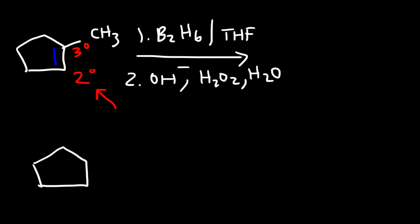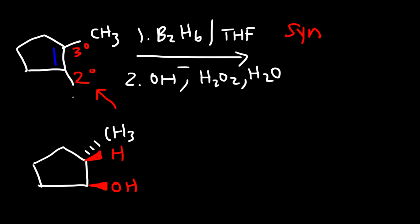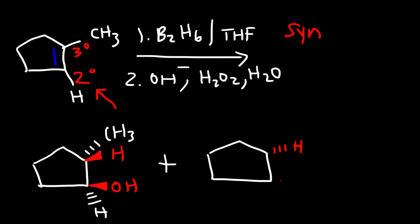We're going to add a hydrogen and an OH group. Let's put the alcohol on the wedge. This reaction occurs with syn addition, so the hydrogen and the OH group are added on the same side. That means the methyl group has to be on the dash, and the other hydrogen already present is also on a dash. We can also get the enantiomer: H and OH added on the same side but going into the page, with the methyl and hydrogen coming out of the page. So these are the two products we can get.